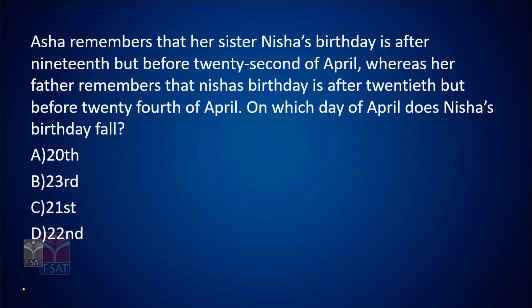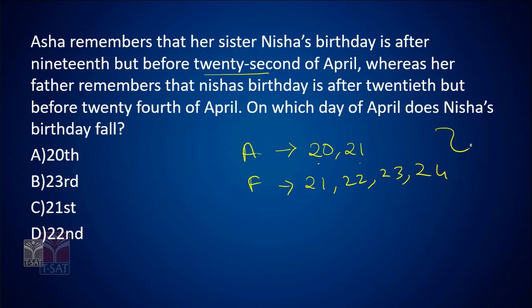Asha remembers that her sister Nisha's birthday is after 19th but before 22nd of April — so either 20th or 21st. Her father remembers it is after 20th but before 24th — so 21st, 22nd, 23rd, or 24th. Combining both, the only common date is 21st. So Nisha's birthday falls on 21st April. The answer is option C.